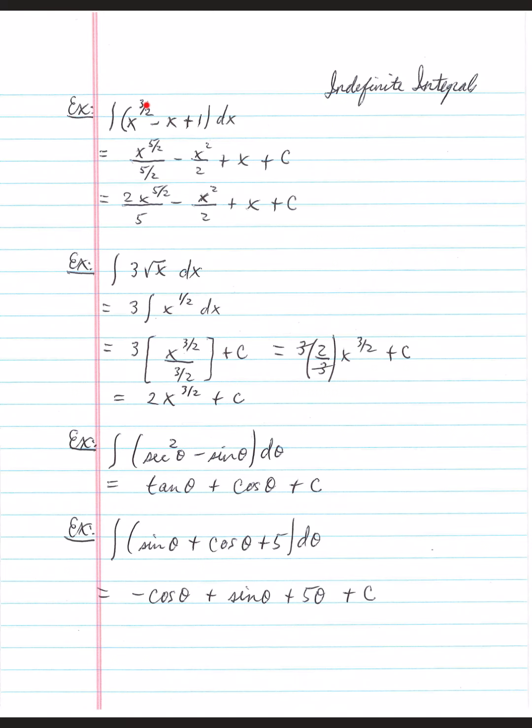With algebraic terms you add 1 to the power, three halves plus 1 is 5 halves, divide by your result, move to the next term. This is an understood x to the 1, so if you add 1 to the power you get 2, divide by the result. Don't change your signs. And then any constant, like a 1 or a 5, its antiderivative will be that number times x. So that's 1x plus a constant of integration. Remember the derivative of a constant is 0, so there could be a term in here. We just add a constant of integration to make it official.